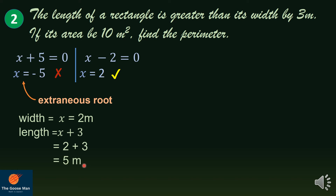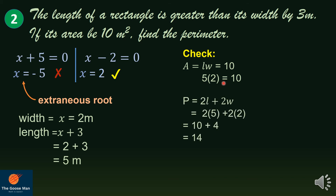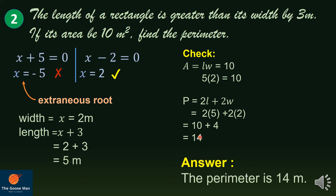So the width equals x which equals 2 meters, while the length equals x plus 3. Substituting x equals 2: 2 plus 3 equals 5, so the length is 5 meters. To check: length times width equals area, and 5 times 2 equals 10, so 10 equals 10. Also, 5 is 3 more than 2. To find the perimeter: P equals 2 times length plus 2 times width equals 2 times 5 plus 2 times 2 equals 10 plus 4 equals 14. Therefore, the perimeter is 14 meters.